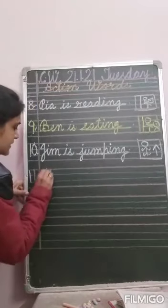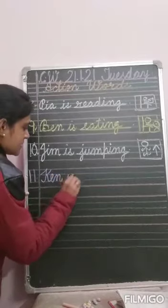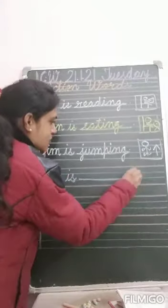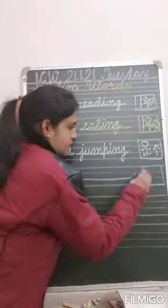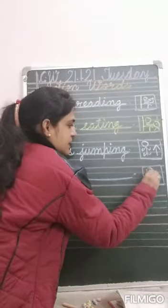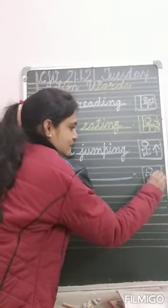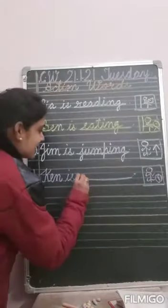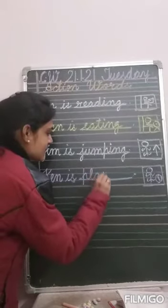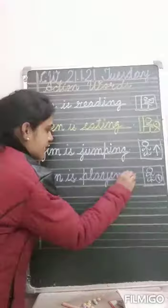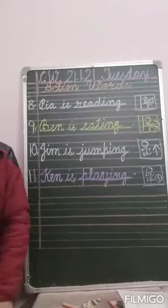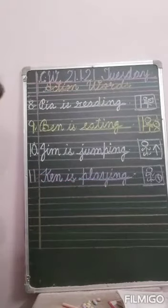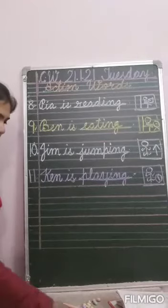Number eleven. Ken is dash. See what Ken is doing — there is a ball. He is playing. Ken is playing. Write down playing. P-L-A-Y-I-N-G. Ken is playing.